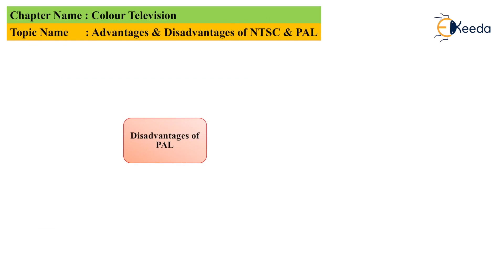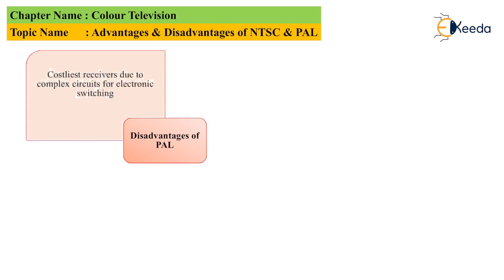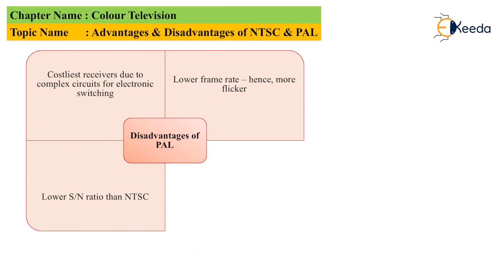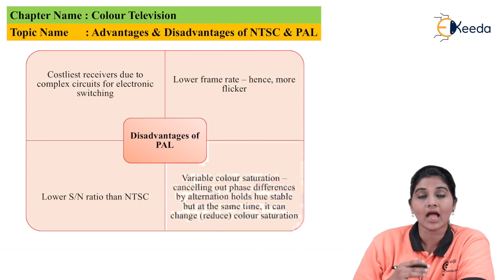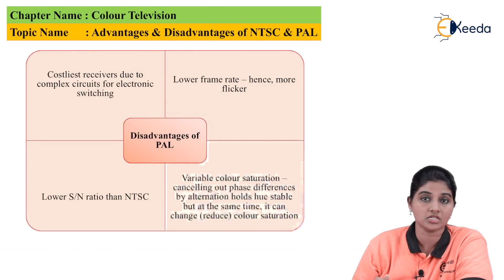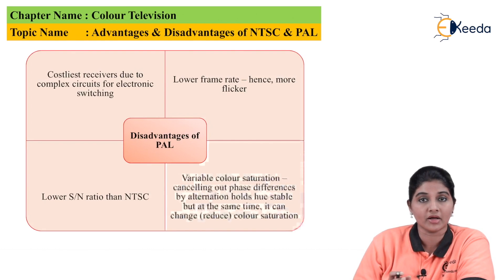The first disadvantage of PAL is that costlier receivers are required because of the complex electronic circuitry or complex electronic switching methods. Then there is a low frame rate, and hence flicker occurs in the picture. There is also a lower signal-to-noise ratio as compared to NTSC, and variable color saturation — cancelling out the phase difference by alteration stabilizes hue, but at the same time it can change the color saturation, meaning when a phase shift is added into the subcarrier the hue becomes stable but the color gets saturated.